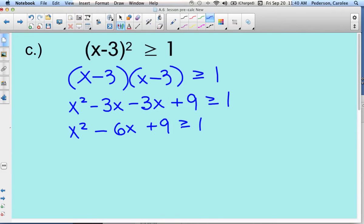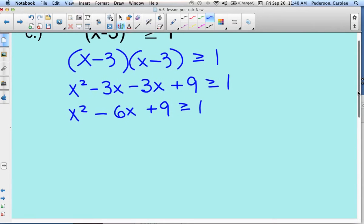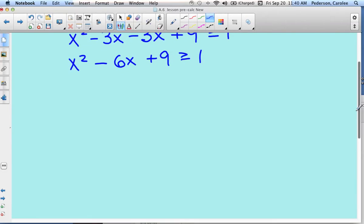Now we need to move that positive 1 to the left side. We want to set the entire inequality equal to 0 so we can make it factorable. So we're going to subtract 1 from both sides. 9 minus 1 is 8.